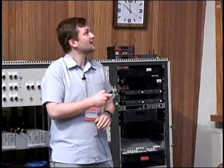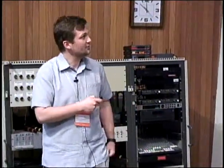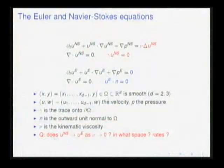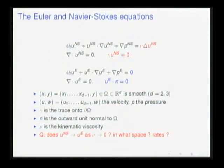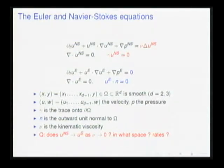We are considering Navier-Stokes, which I have written here. For most of the talk, I will denote by gamma the trace on the boundary. So you have Dirichlet boundary conditions for Navier-Stokes and slip boundary conditions for Euler. We will be looking, at least in the beginning, at the problem on half space — but again, a bounded domain with smooth boundary will work pretty much the same.